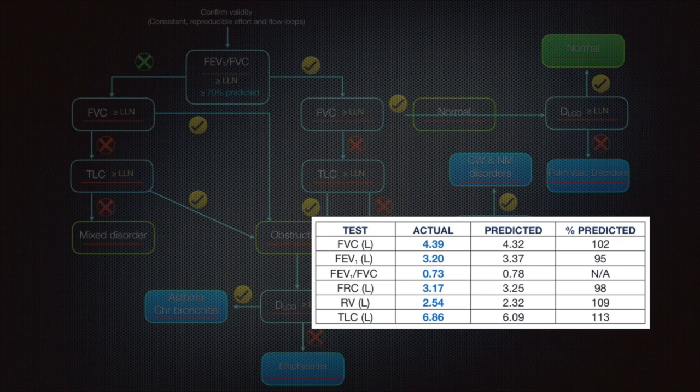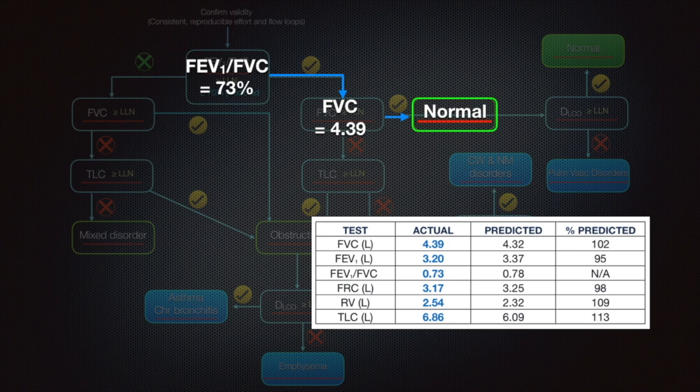Now let us examine and go through the flowchart step by step. The ratio FEV1 by FVC is 73 percent, acceptable. Very good. Look at the FVC PFT, that is 4.39 liters, which is as predicted 102 percent of predicted. So it is normal. We can label it as a normal PFT. To check, look at the total lung capacity, 6.86, fair enough. So most probably we are dealing with a normal lung.